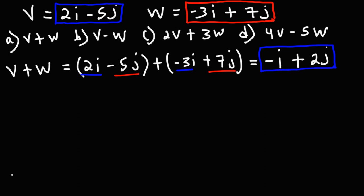Now let's move on to part b. What's v minus w? This is going to be 2i minus 5j minus w, which is negative 3i plus 7j. Let's rewrite it first and distribute the negative sign.